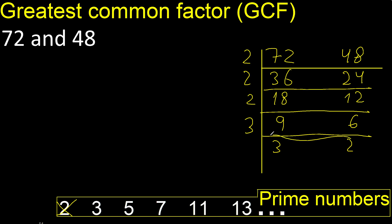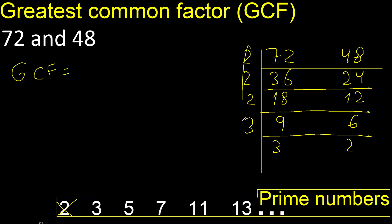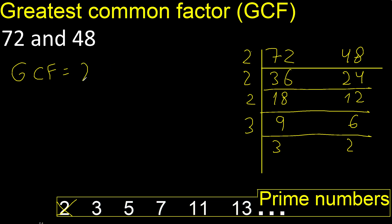Finish, because 3 and 2 cannot be divided by the same number. Multiply 2, multiply by 2 is 4, multiply by 2 is 8, multiply by 3 is 24. Finish.